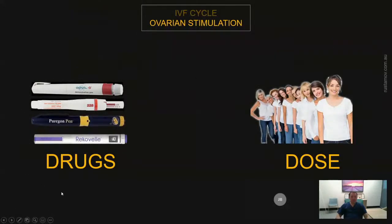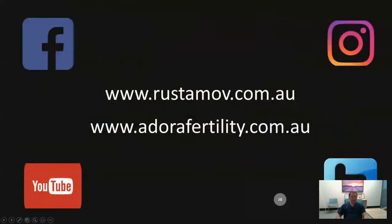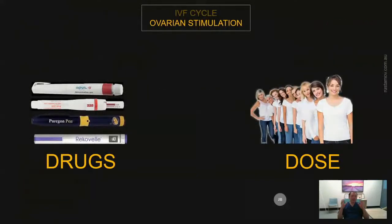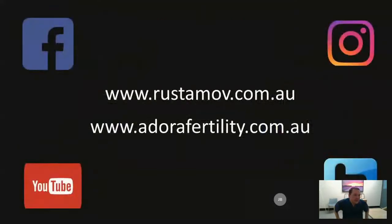So we have covered drugs and dose. In this critical step of cycle planning, we decide which drug to use for ovarian stimulation and what dose to use by reviewing the patient's previous history and ovarian reserve, and then tailoring the drug and dose to each individual patient. That is the end of my presentation.